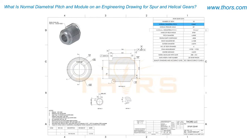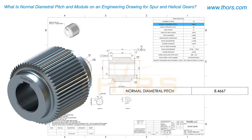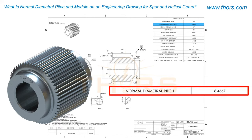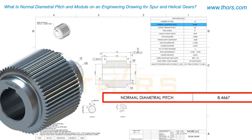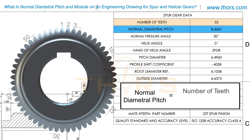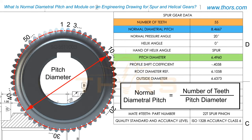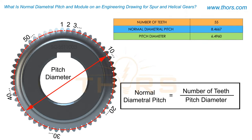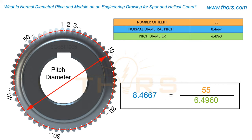Normal diametral pitch is used on Imperial gear drawings. In this example, the normal diametral pitch is 8.4667. The normal diametral pitch can be calculated by dividing the number of teeth by the pitch diameter. Using the information on the gear data block, the calculation is 55 divided by 6.4960, which equals 8.4667.